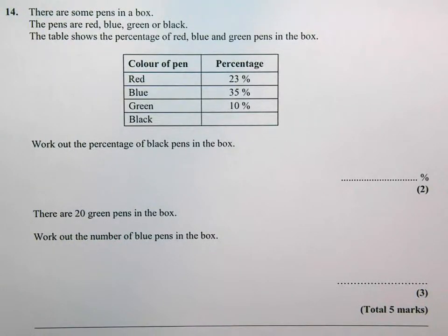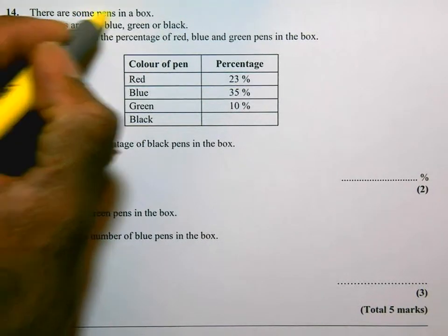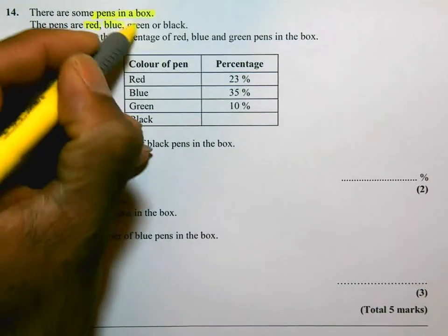Okay, this is question 14 on the practice paper A calculator paper. The question says there are some pens in a box. The pens are red, blue, green or black.